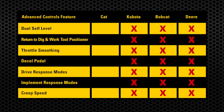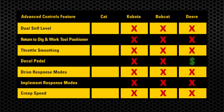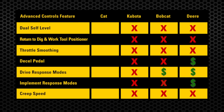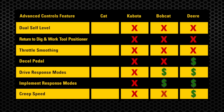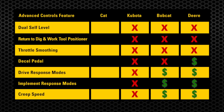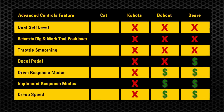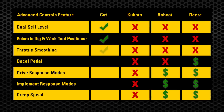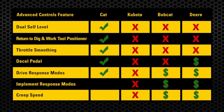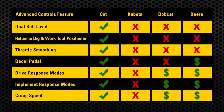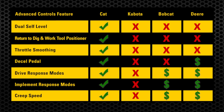However, both Bobcat and Deere offer electro-hydraulic controls as an upgrade. Once this option is installed, creep speed and joystick sensitivity can be adjusted. These advanced controls on the CAT skid steer and compact track loaders help you achieve better results in less time, so compare for yourself and experience the difference of a CAT machine. For more information, please visit your local CAT dealer.